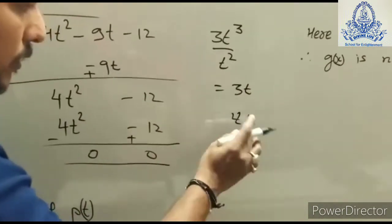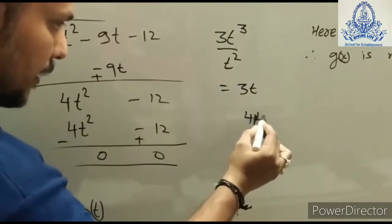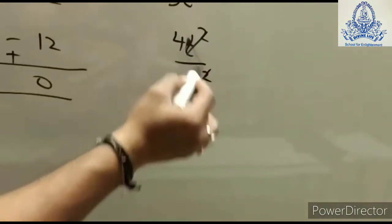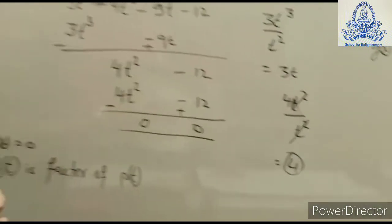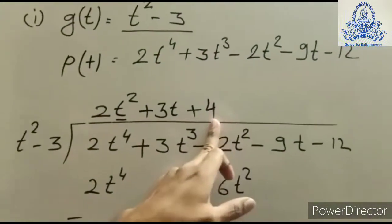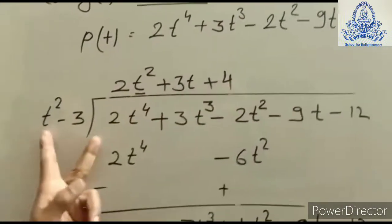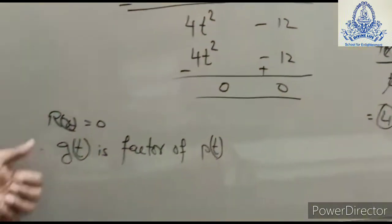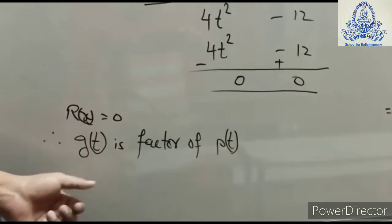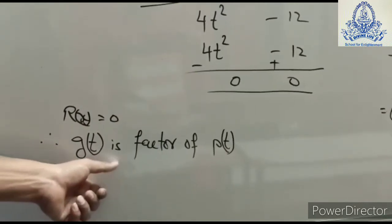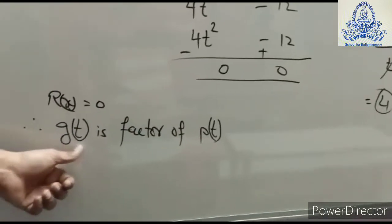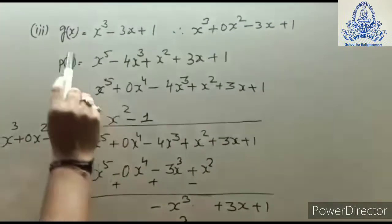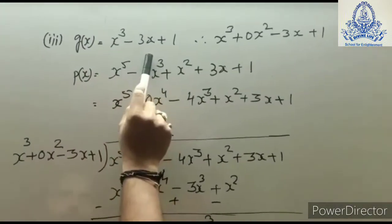After the next subtraction, two terms remain. 4t² divided by the first term of the divisor t² gives 4, the third term of the quotient. Multiplying 4 with all terms of the divisor and subtracting gives 0 — no remainder. If the remainder is 0, then the first polynomial is a factor of the second polynomial.